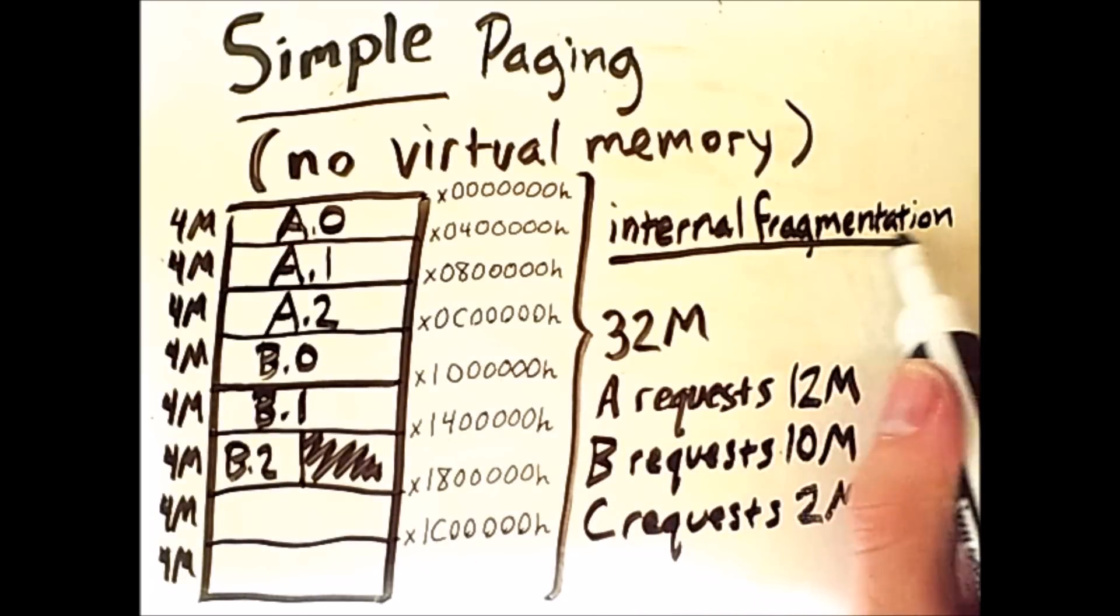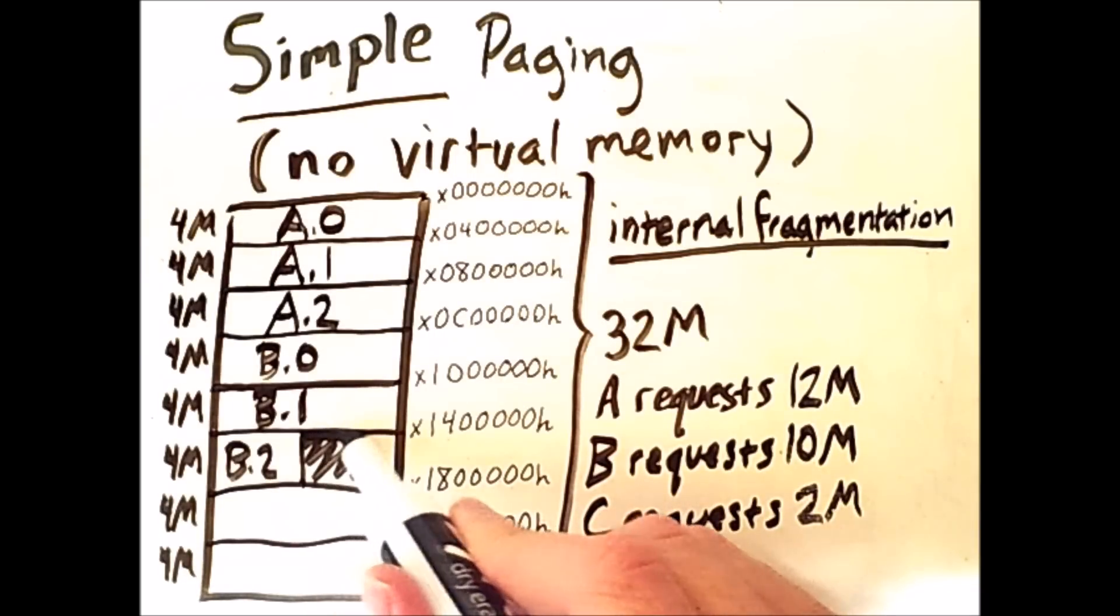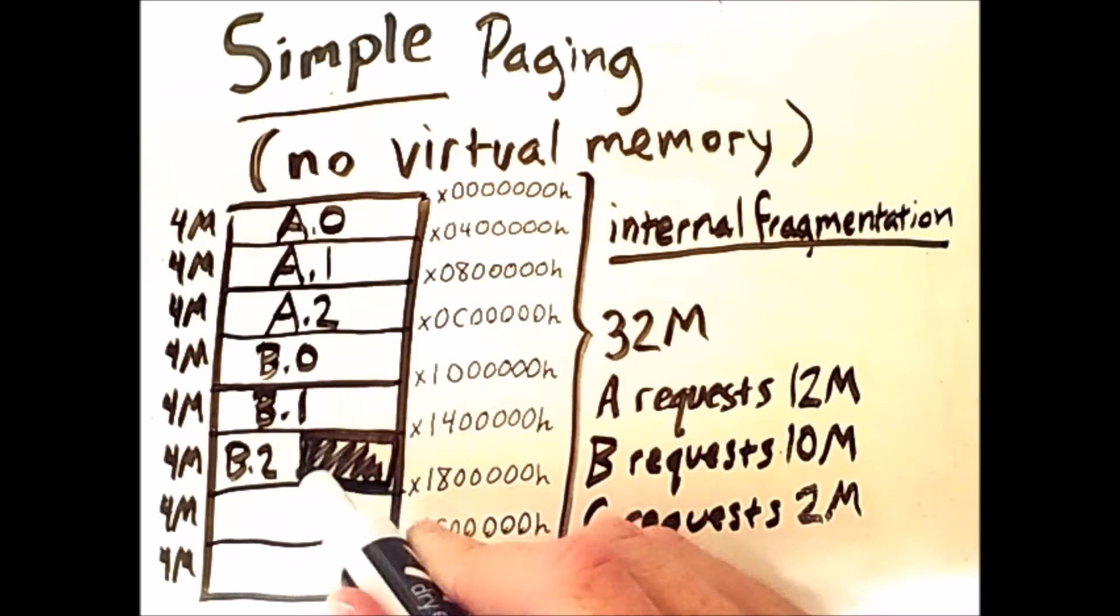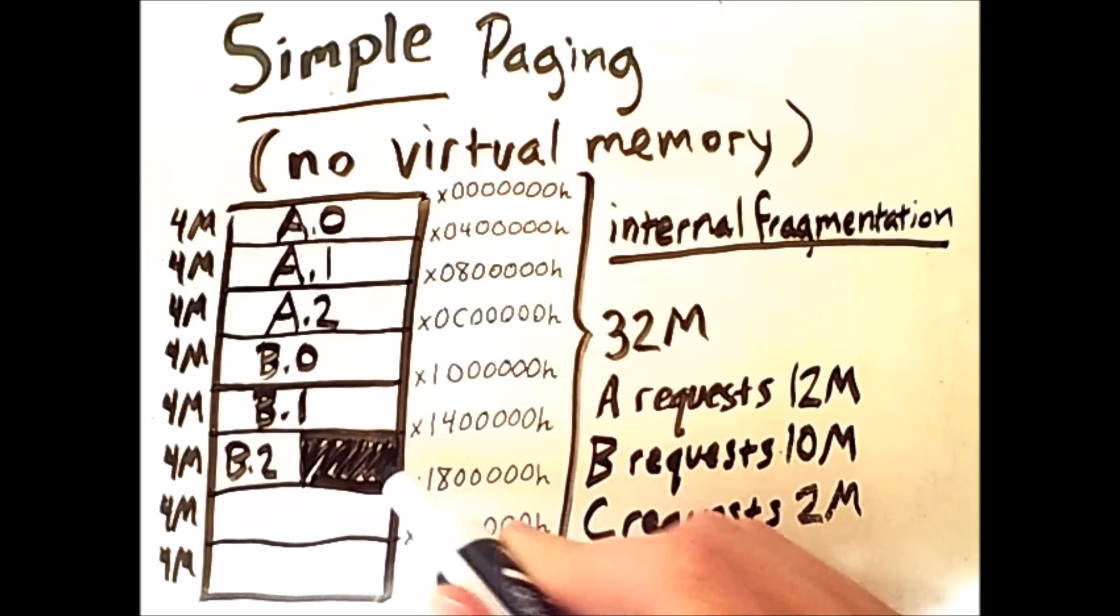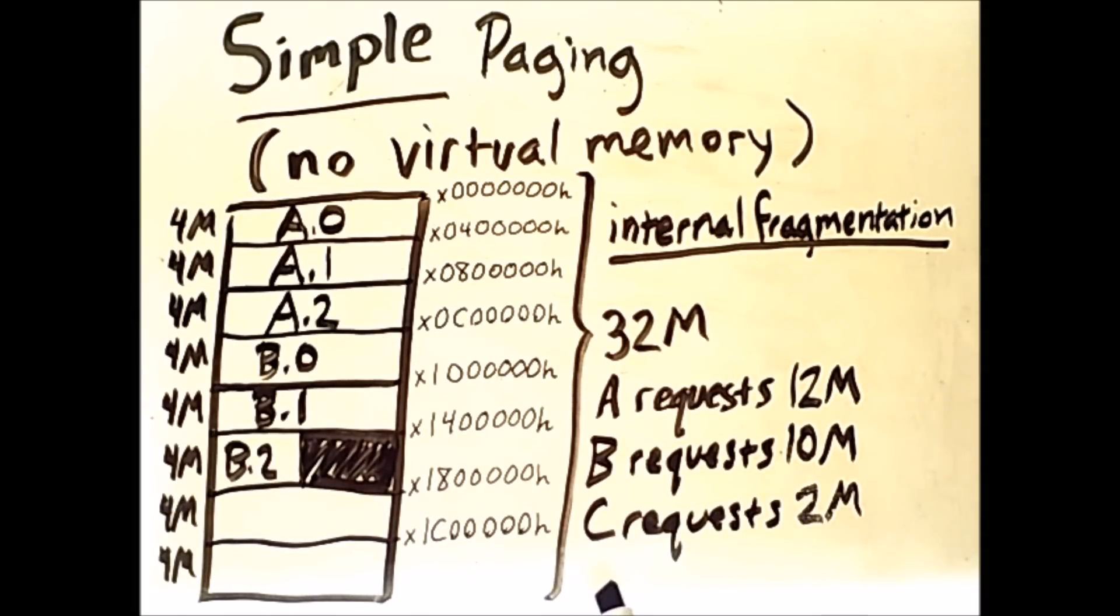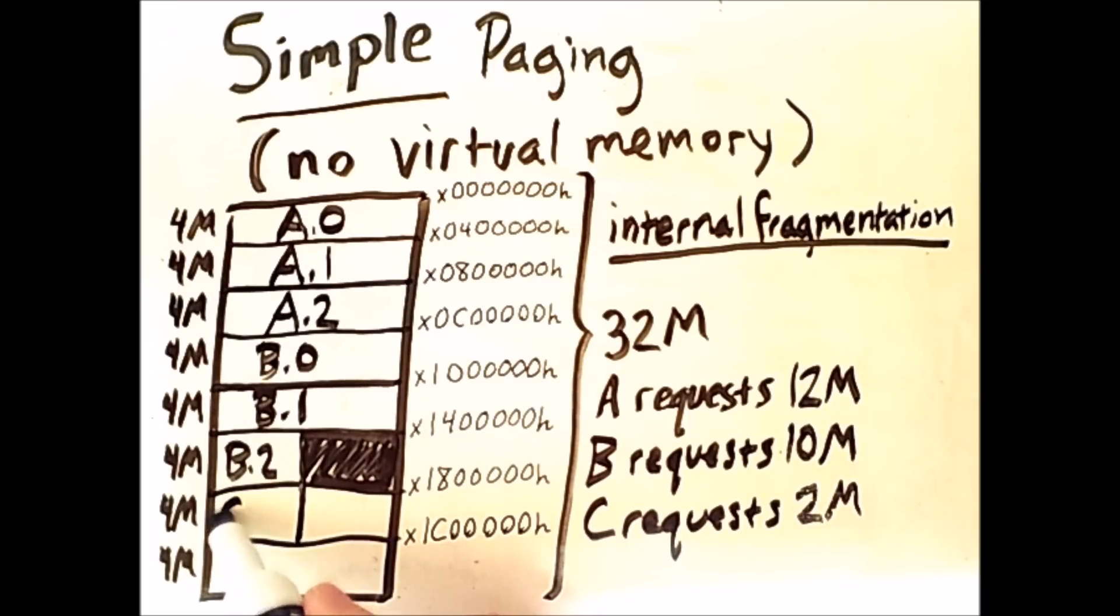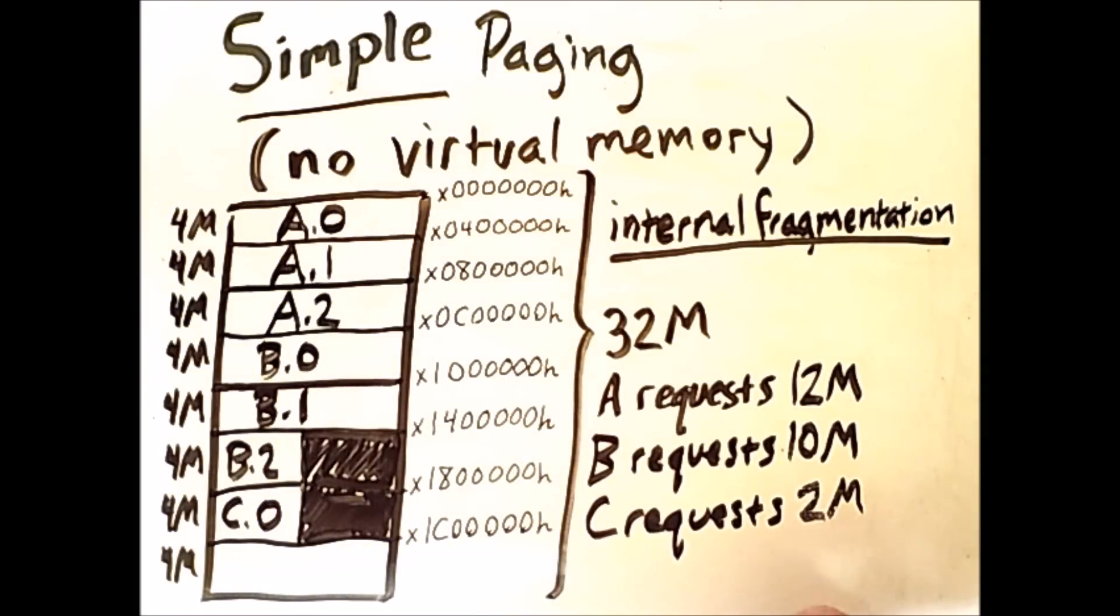So the internal fragmentation is what we're seeing here, in this box here. Next, process C requests 2 megabytes, and so it only needs one frame, and it will only take up half of that frame. And now we have a memory that is mostly full. We have one free frame down here that could still hold up to 4 megabytes.